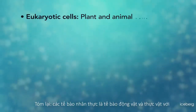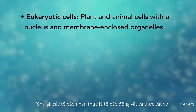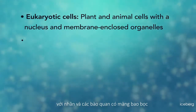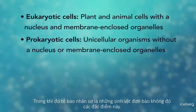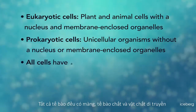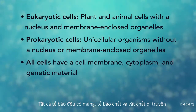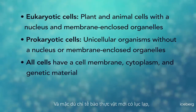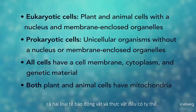In summary: eukaryotic cells are plant and animal cells with a nucleus and membrane-enclosed organelles, while prokaryotic cells are unicellular organisms without these things. All cells have a cell membrane, cytoplasm, and genetic material. And even though only plant cells have chloroplasts, both plant and animal cells have mitochondria.